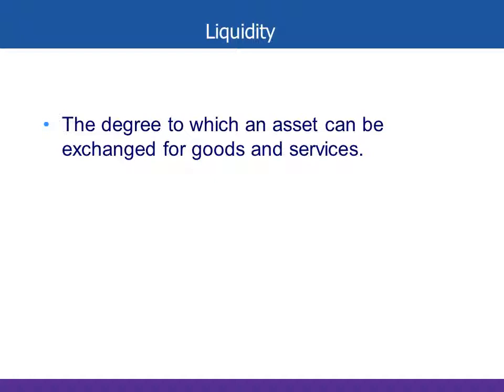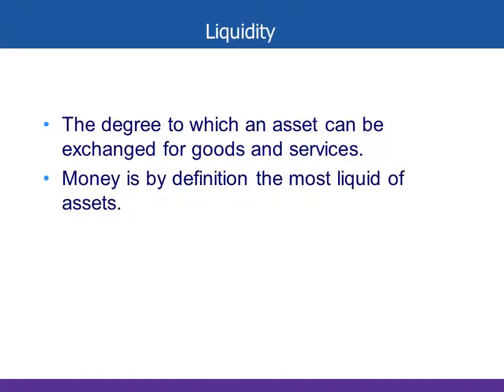If you go back to 2003, the housing market was extremely liquid — you could list your house on Monday and have it sold by Friday. There were people who didn't even need to list their homes; realtors had buyers lined up already. But by definition, money is the most liquid of all assets.